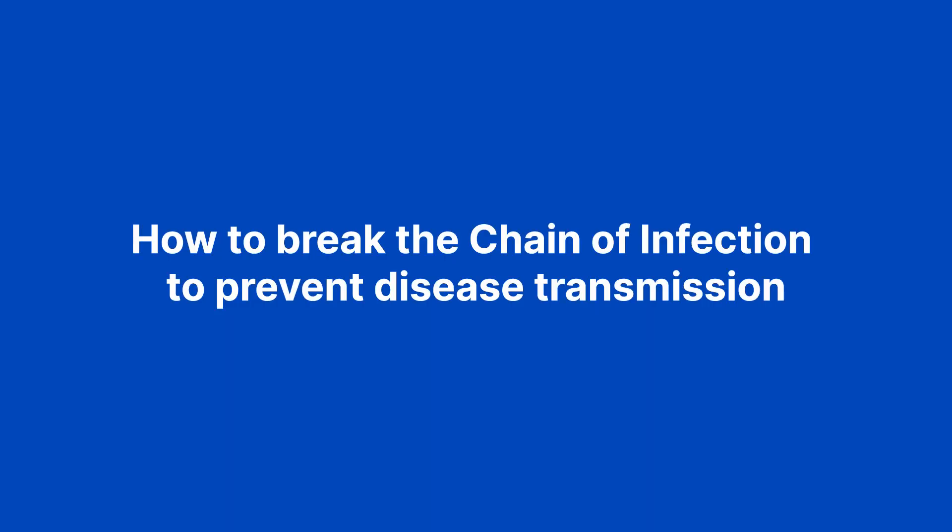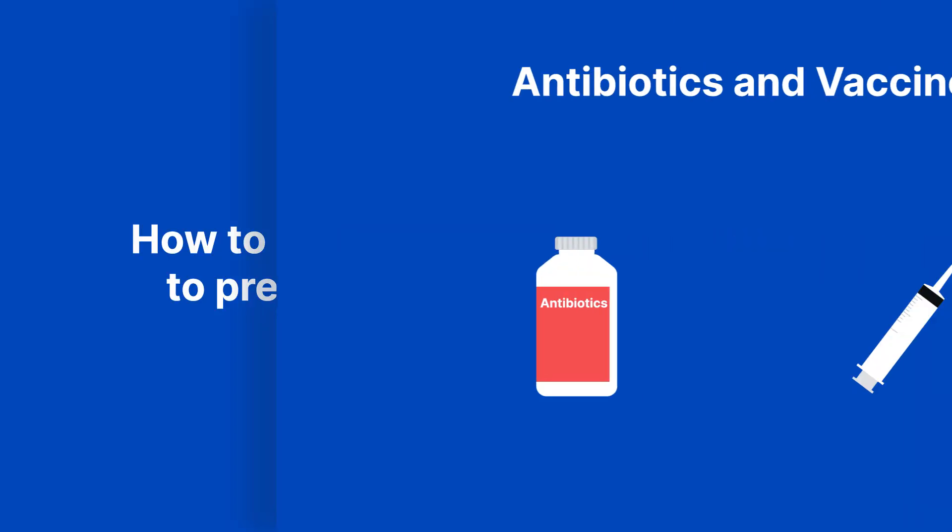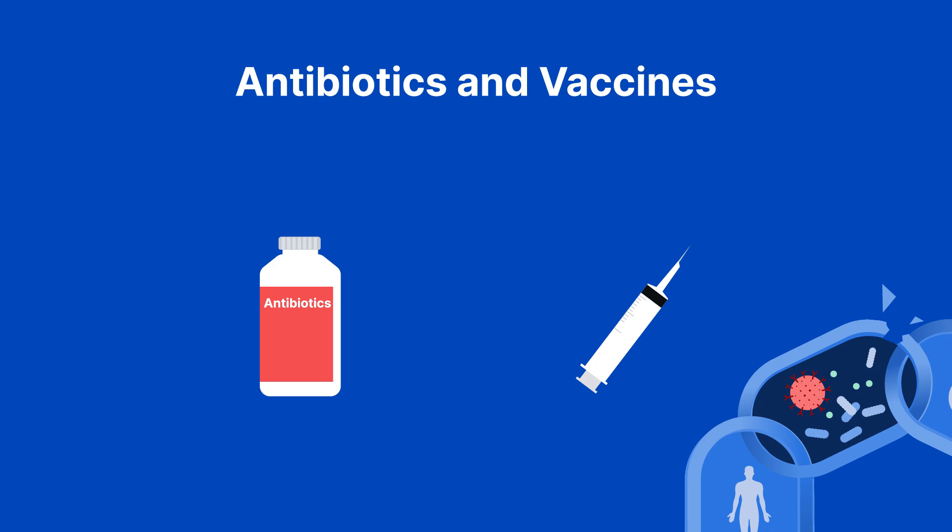Now let's explore how to break the chain of infection to prevent disease transmission. Antibiotics and vaccines can break the chain at the first link, the infectious agent. For instance, antibiotics effectively target bacterial pathogens, saving lives in conditions like strep throat. Some antibiotics, such as penicillin, kill bacteria by destroying the cell wall, while others, such as tetracycline, interfere with the ability of bacteria cells to reproduce.